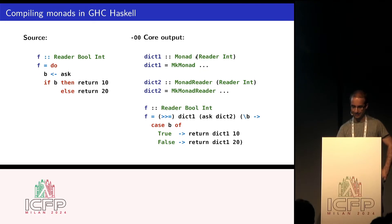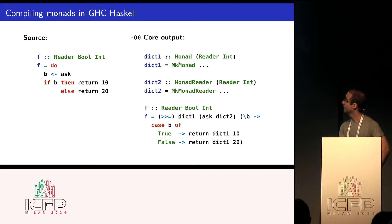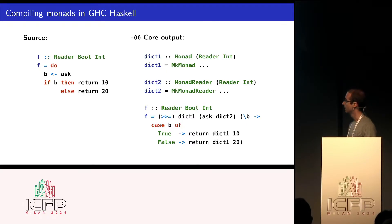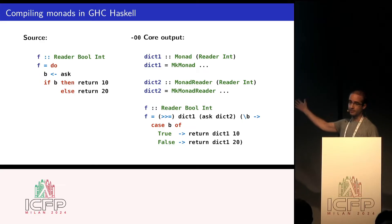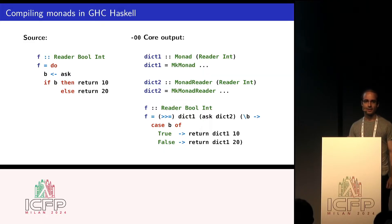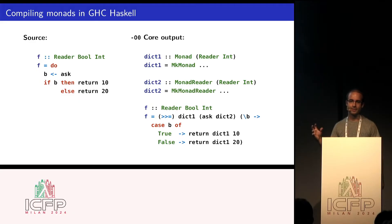Then we get something like this. We have the dictionaries for monads and for monad readers. Then we just have a simple de-sugaring, a simple type inference, instance resolution and elaboration, so that we get something with a very similar structure as what we wrote, except that all the instances are resolved. And then all the methods - the binding and the return for the monad - are also inserted into this code.